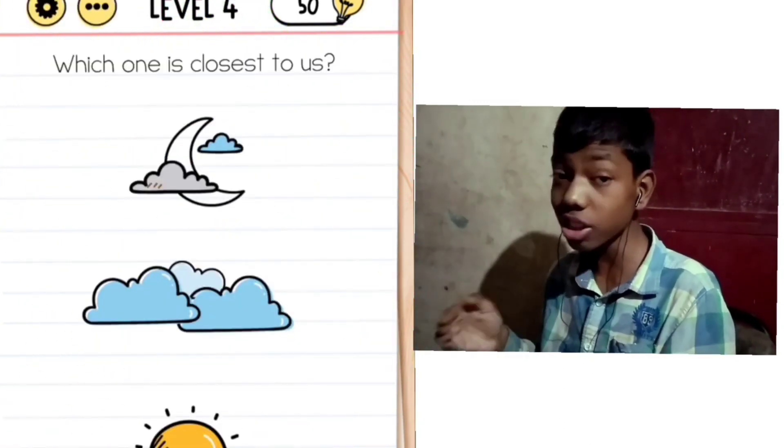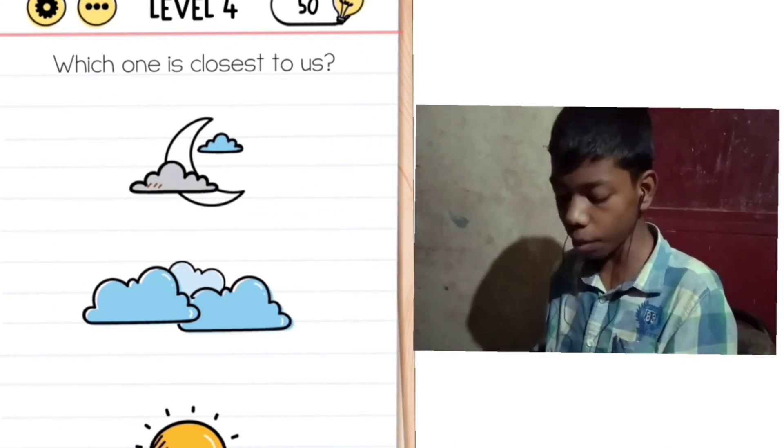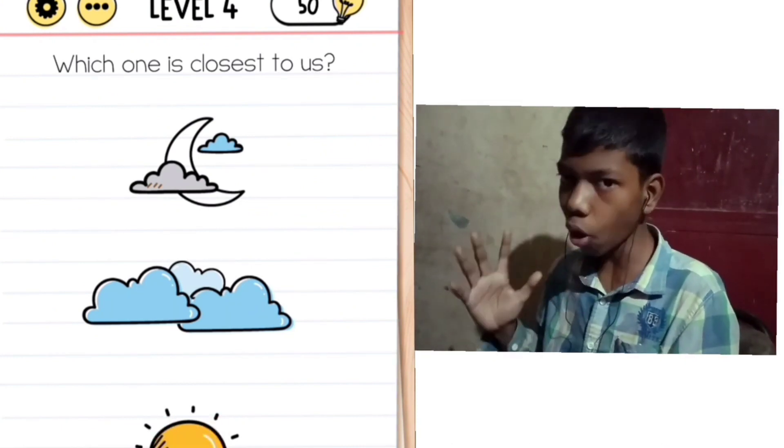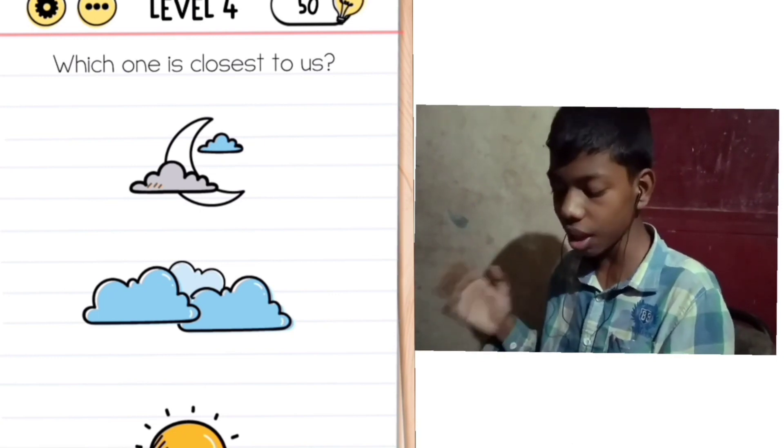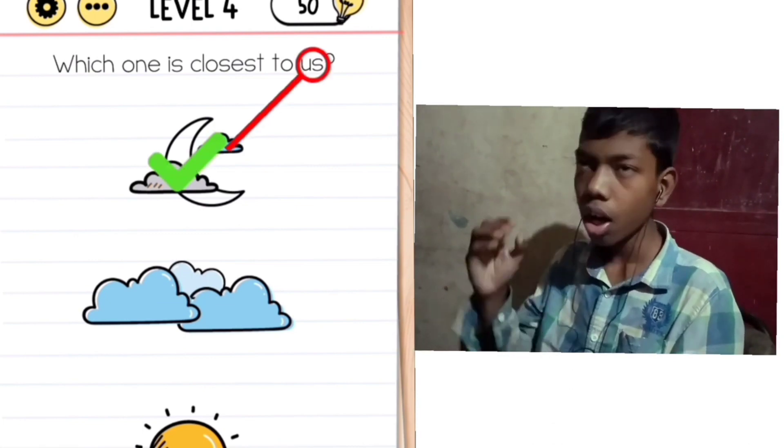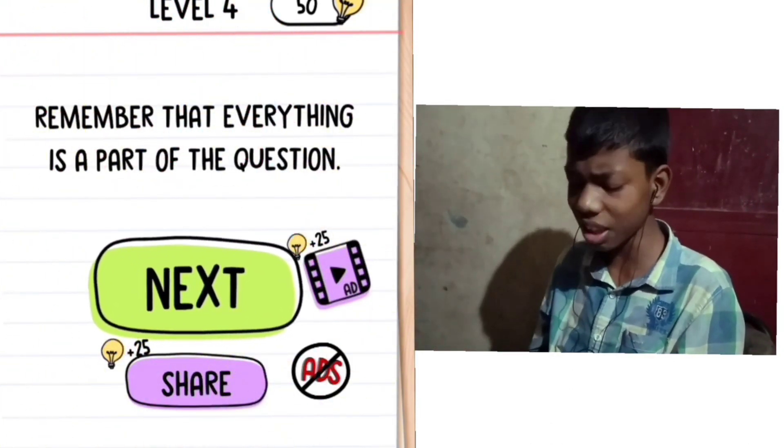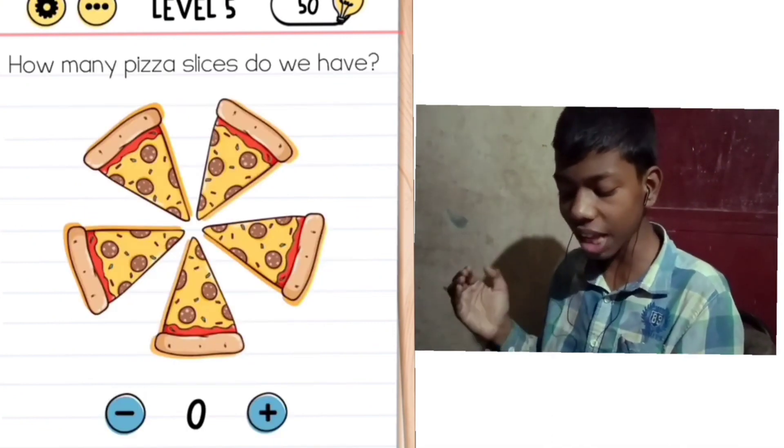Level 4: Which one is closest to us? We are thinking who is closest to us. If we click ourselves we are closest. But sun is wrong. This game has logic. What about cloud? No. So I feel like it's the screen. And our answer is correct. Level 5: How many pizza slices do we have?